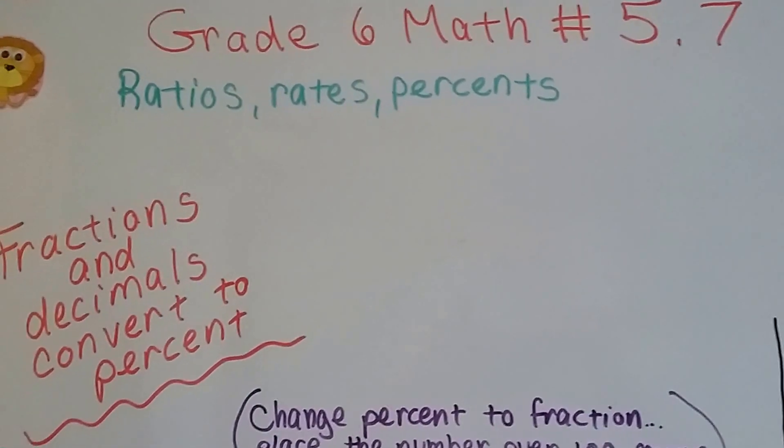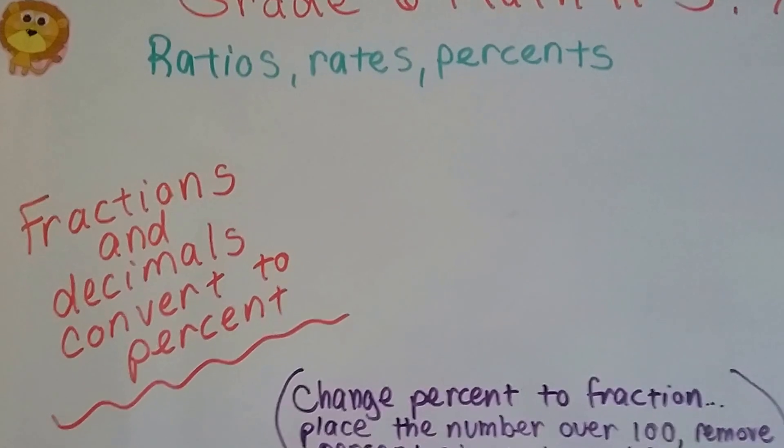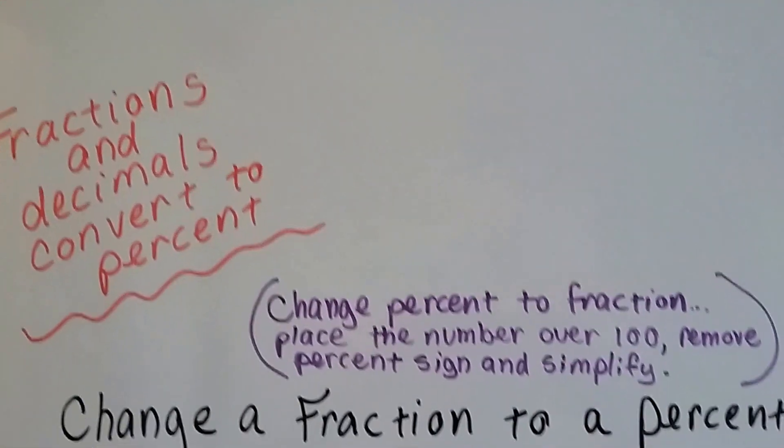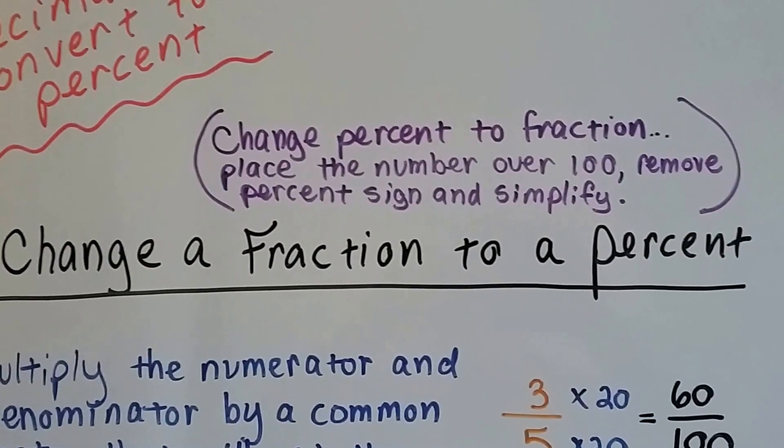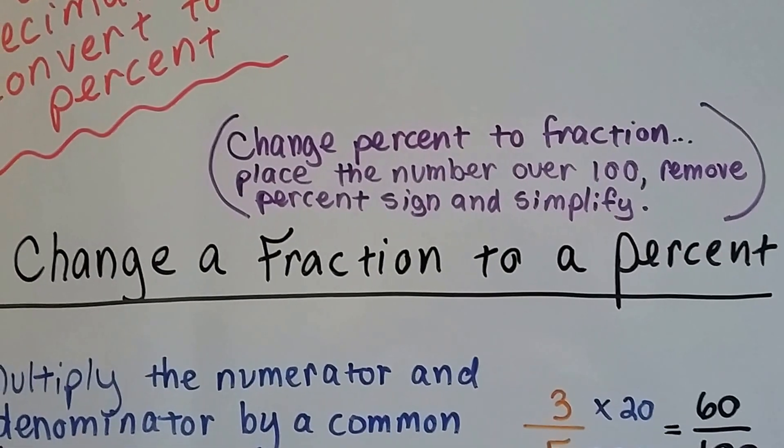Grade 6 math number 5.7. Fractions and decimals convert to percent. When we want to change a percent to a fraction, we just place the number over 100 and remove the percent sign and simplify.